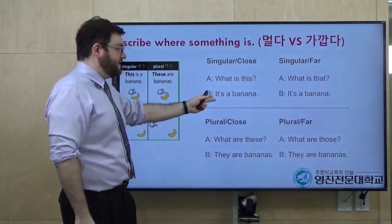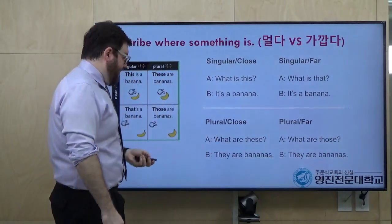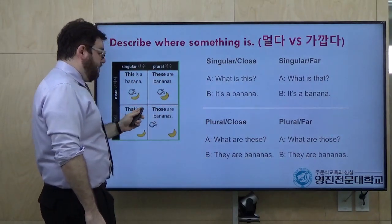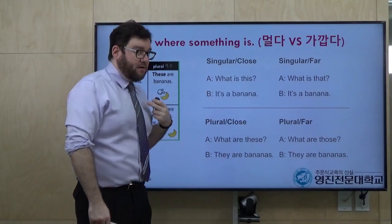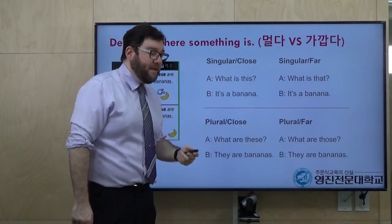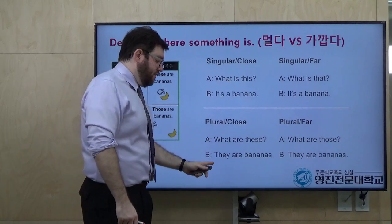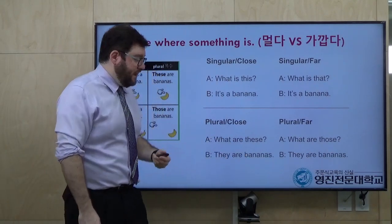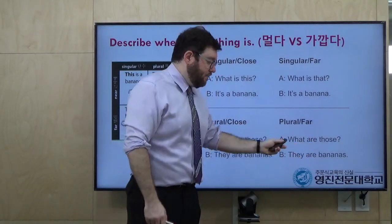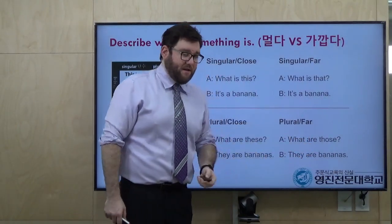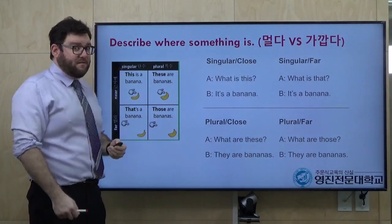You could also say 'this is a banana' and 'that is a banana.' Next, for many bananas — close or far: what are these? They are bananas. And if they're far away: what are those? They are bananas. You can pause and study this.